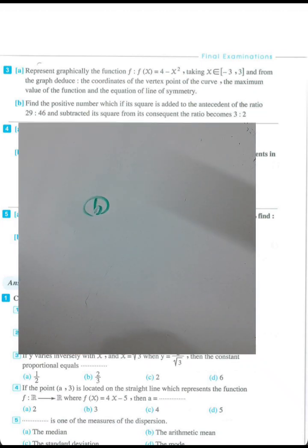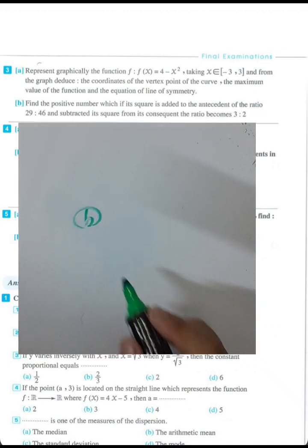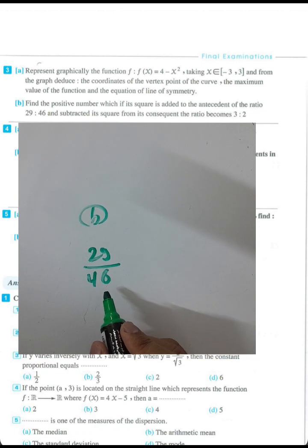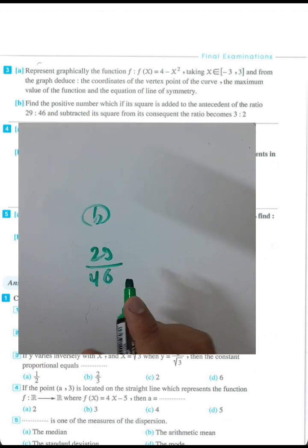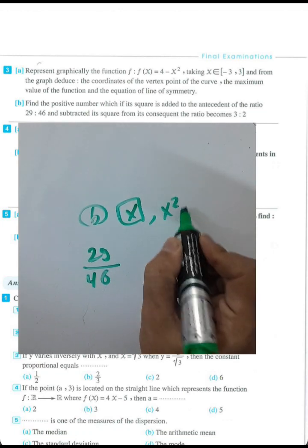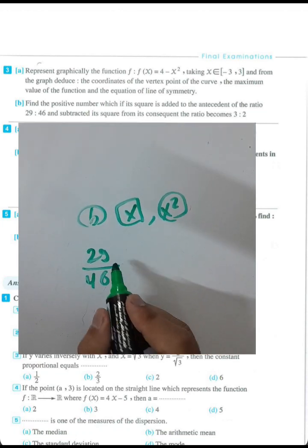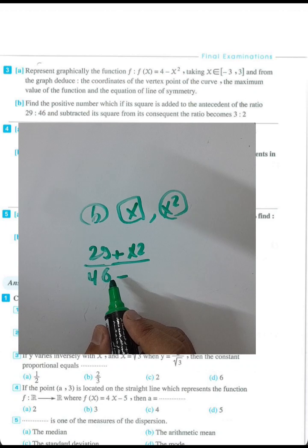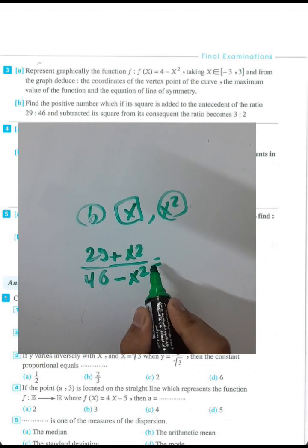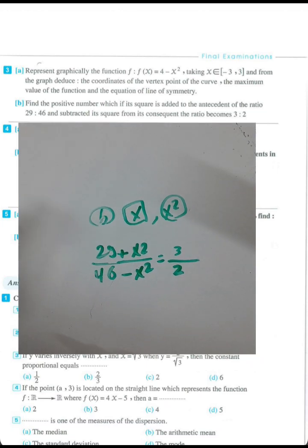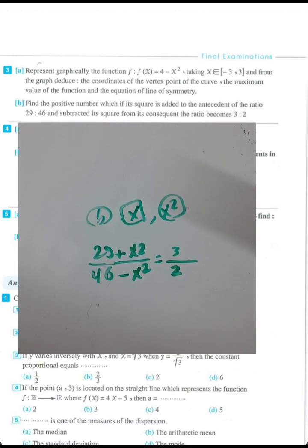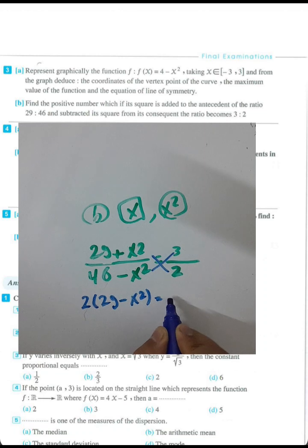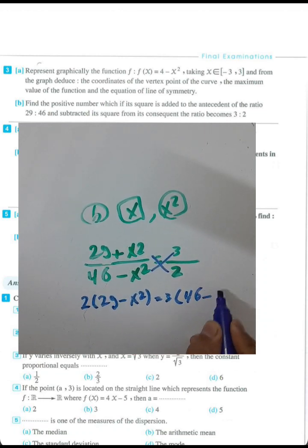Question 3, letter b: find the positive number whose square, when added to the antecedent of the ratio 29 to 46 and subtracted from the consequent, gives the ratio 3 to 2. Let the number be x; its square is x squared. Adding x squared to the numerator 29 and subtracting x squared from the denominator 46 gives the ratio 3 over 2.